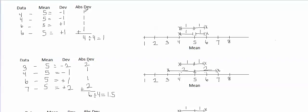So when we calculate the mean of the absolute deviations and get the mean absolute deviation, we're really just getting the average distance to the mean. Since all four data values are one away from the mean of five, the average of all the distances to the mean is one. If all distances equal one, the average of those distances is just one. That's why the mean absolute deviation came out to one.